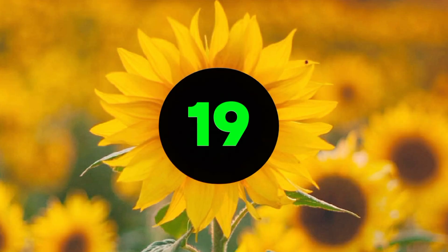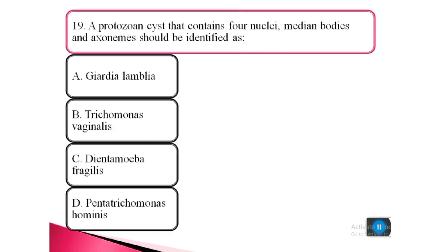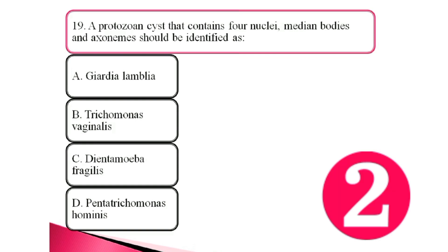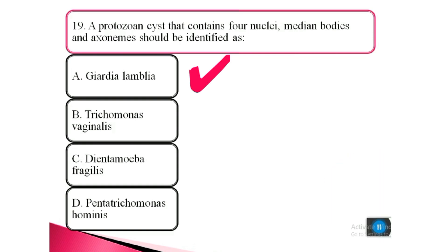Question 19. A protozoan that contains four nuclei, median bodies, and axonemes should be identified as: a. Giardia lamblia, b. Trichomonas vaginalis, c. Dientamoeba fragilis, d. Pentatrichomonas hominis. The answer is a. Giardia lamblia.